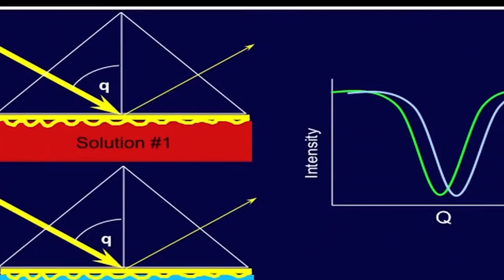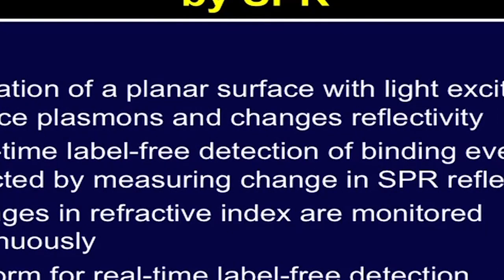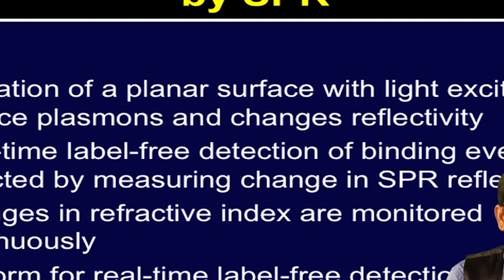Let us look at the SPR angle — how it depends on the refractive index near the surface — and the SPR angle, which is directly related to the amount of biomolecules binding on the gold surface. The real-time label-free detection of binding events can be detected by measuring changes in SPR reflectivity. These changes in refractive index are continuously monitored to obtain kinetic data in real time, making it a remarkable label-free detection technique.